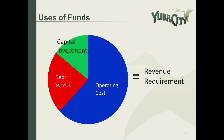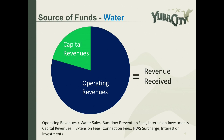When we're talking about revenue requirements, they are based upon capital investment, debt service, and operating costs. Capital investment is ongoing capital projects which are pay-as-you-go, and debt service projects are past capital investments that are financed over time. The sources of fund for water include capital revenues and operating revenues. Operating revenues are water sales, backflow prevention fees, and interest on investments. Capital revenues include extension fees, connection fees, the Hillcrest water surcharge, and interest on investments.